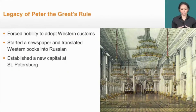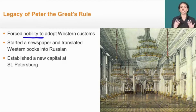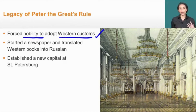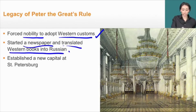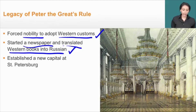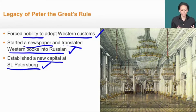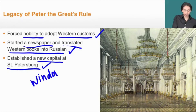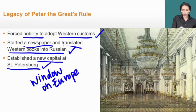The legacy of Peter the Great's rule is very similar to Louis XIV in that he forced his nobility to do everything according to his own decisions. He forced his nobility to adopt Western customs — taking away the long beards and elaborate dress of the boyars, making them cut their beards and dress more simply. He started a newspaper and translated many Western books into Russian. Finally, he established a new capital at St. Petersburg, right on the water, hoping it would be a new trading post — calling it the 'window on Europe,' intended as the model for all of Russia in his Westernization reform.